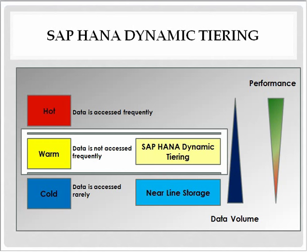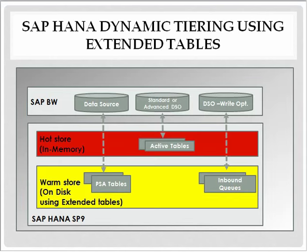To tackle this, SAP introduced the new concept of Dynamic Tiering. HANA Dynamic Tiering enables you to optimize the main memory resource management using extended tables for BW objects with warm data.